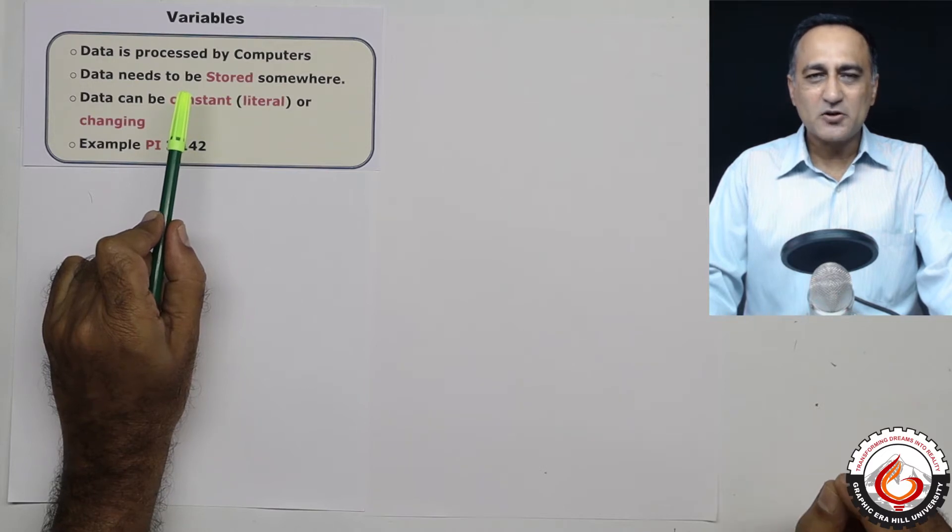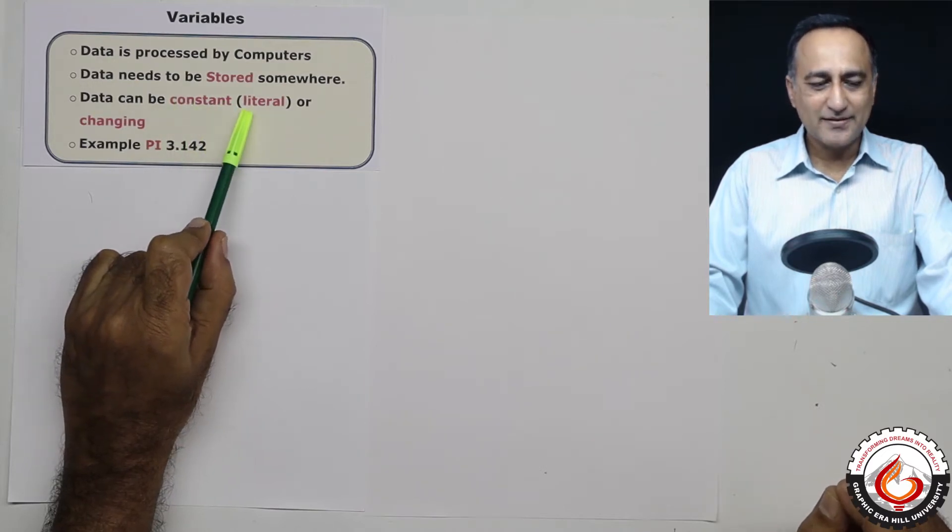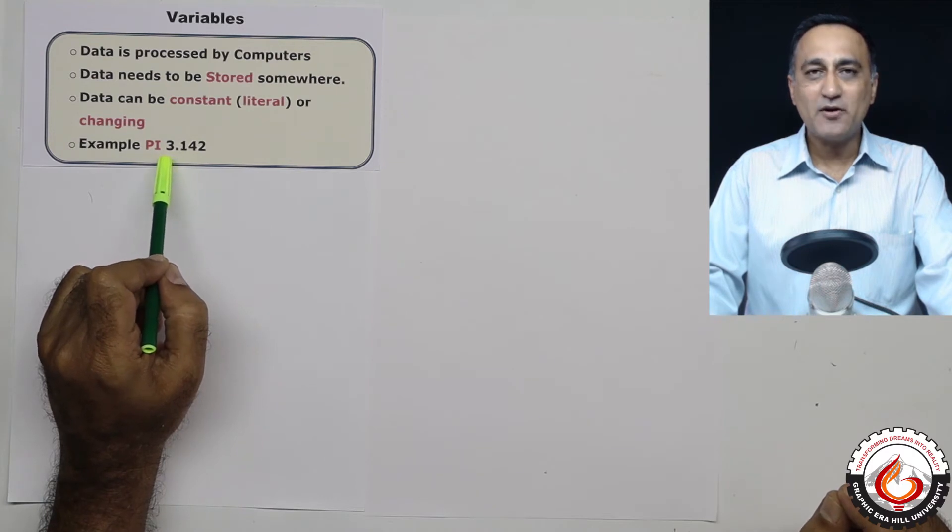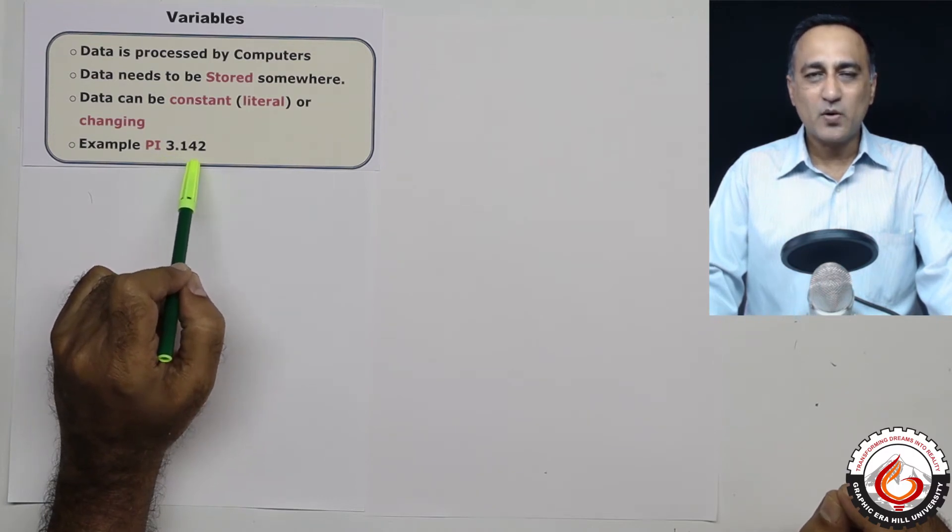Now data can be of the type constant or also called as a literal. An example of a constant or literal would be the value of pi 3.142.